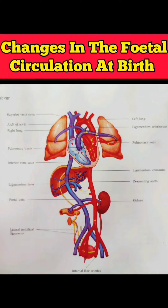First, closure of the foramen ovale. With the first breath, alveolar expansion and increase in alveolar capillary oxygen tension cause marked decrease in pulmonary vascular resistance. This causes a marked accompanying decrease of right atrial afterload and right atrial pressure. Clamping of the umbilical cord reduces venous return to the right atrium, reducing its pressure significantly.